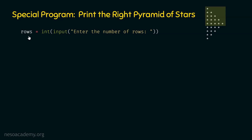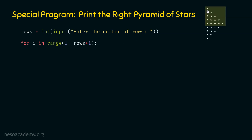Now we know the number of rows. If we have the number of rows, we can easily print this pattern using a nested for loop structure. The outer for loop will represent the rows, and the inner for loop will represent the columns. The outer for loop statement is: for i in range(1, rows + 1). If rows equals five, we get the sequence one, two, three, four, five — which is what we want. Initially i will receive one, meaning we are at row number one and want to print one star. The number of stars depends upon the row number we are currently at.